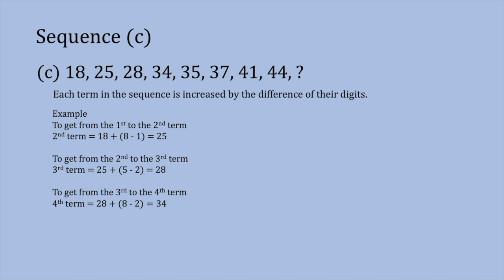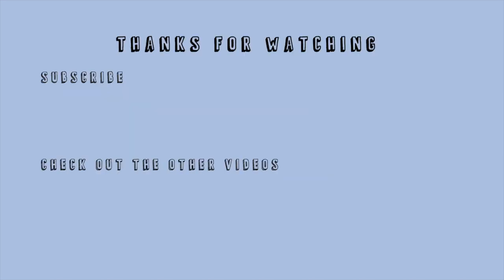We need to find the ninth term in the sequence. We take the eighth term and add the difference of its digits: 44 plus (4 minus 4), which gives us 44. Similar to Sequence B, all terms after the seventh term will always equal 44 — you keep adding 44 by a difference of 0, and if you increase a number by 0 it stays the same. So the last term in the sequence has an answer of 44. If you have any questions or video suggestions, just leave a comment below.